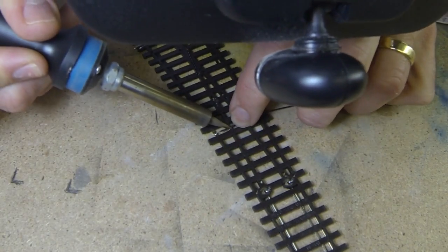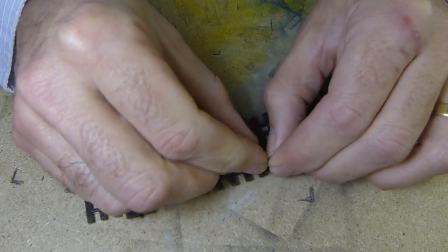If you only connect the fixed switchblades to the stock rails, you can use uninsulated wire.